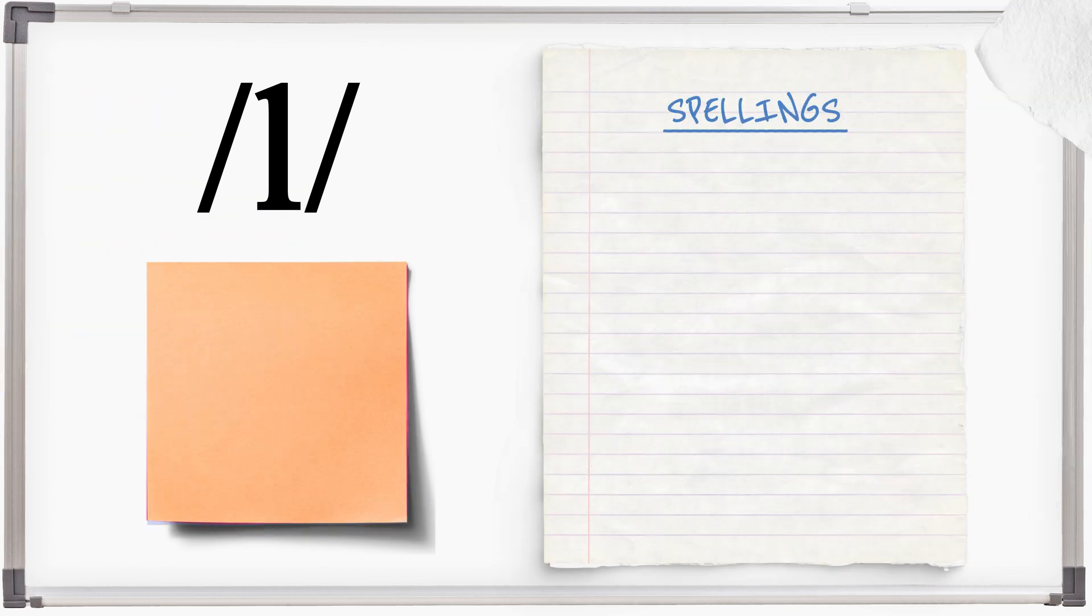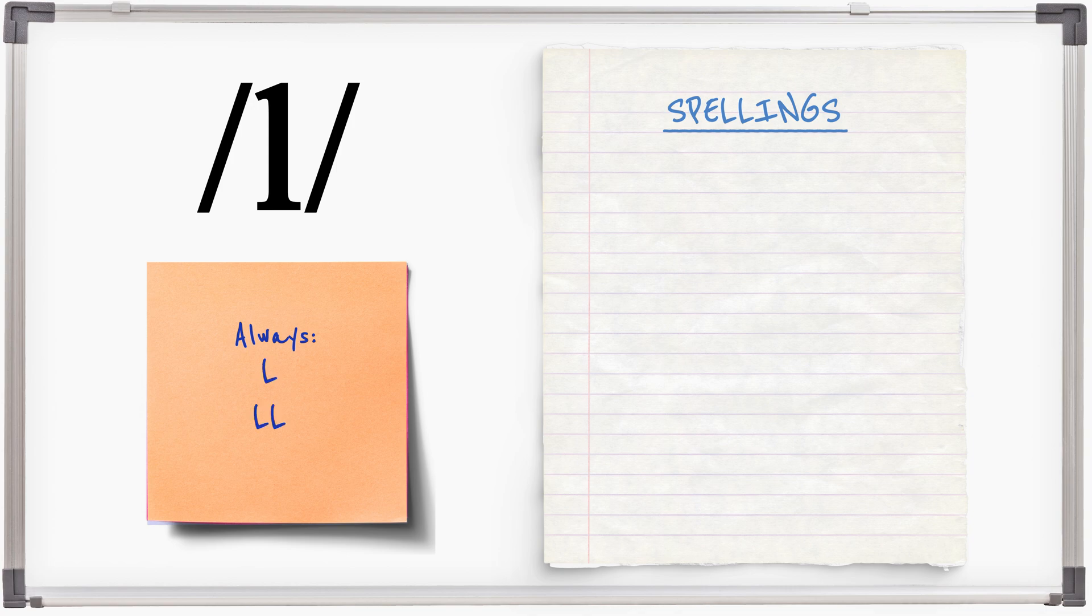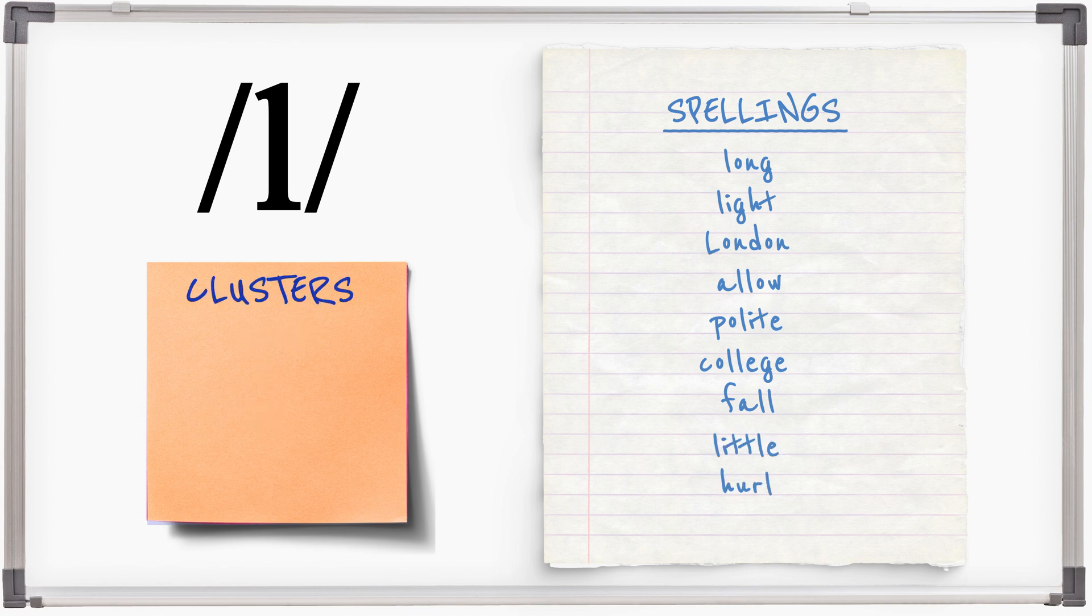L is always spelt with one or two L's. Examples: Long, Light, London, Allow, Flight, College, Fall, Little, Hurl, Clear.